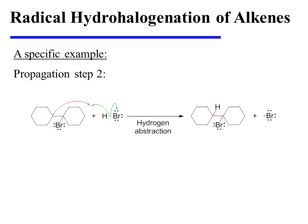Addition to either alkene carbon will ultimately yield the exact same radical intermediate and reaction product. During propagation step two, the carbon-centered radical abstracts a hydrogen atom from an unreacted molecule of HBr, yielding the alkyl bromide reaction product and regenerating the critical bromine radical, making this a chain reaction.